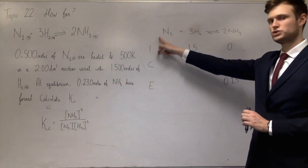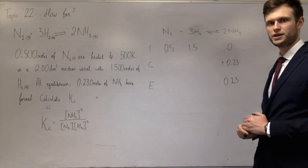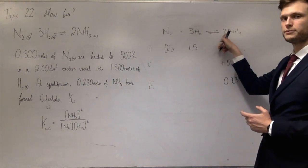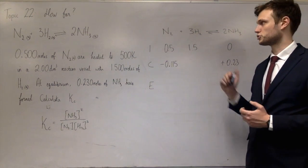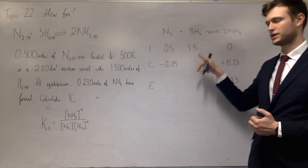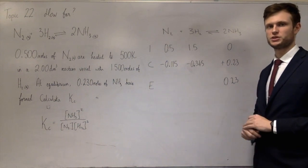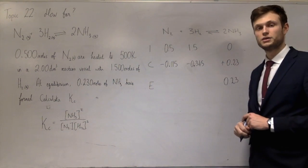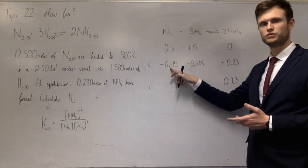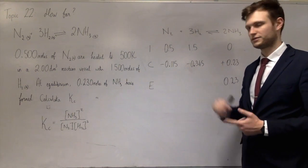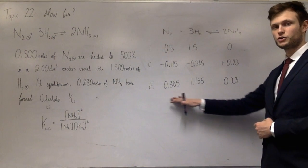Using the stoichiometry, the amount of nitrogen used is half the amount of ammonia made — because there's a 1 and a 2 in the equation — so minus 0.115 moles of nitrogen. Because there's a 3 and a 2, hydrogen used is three-halves times that. For nitrogen at equilibrium: 0.5 minus 0.115. For hydrogen: 1.5 minus the corresponding change.